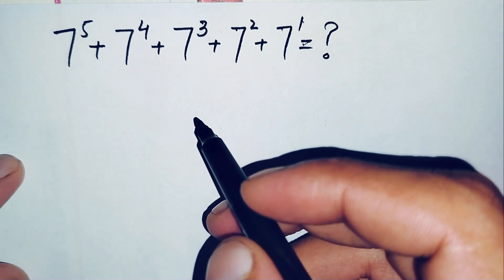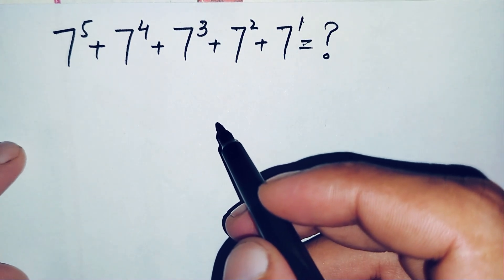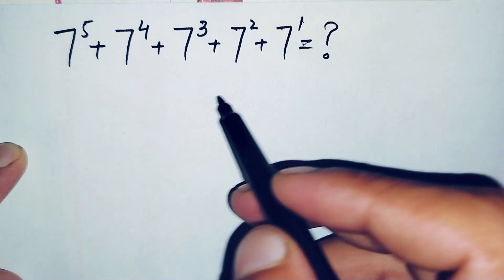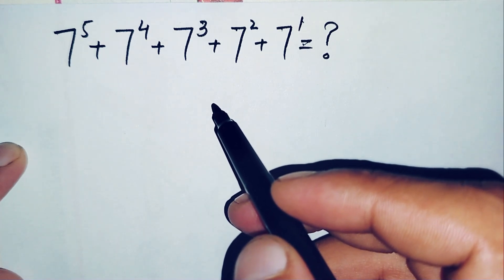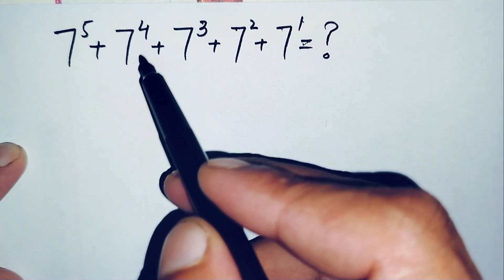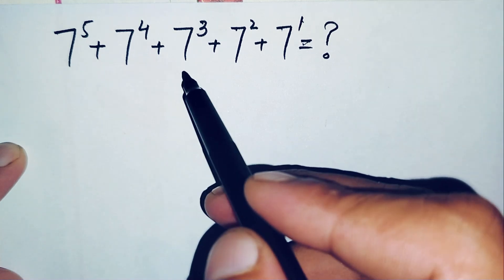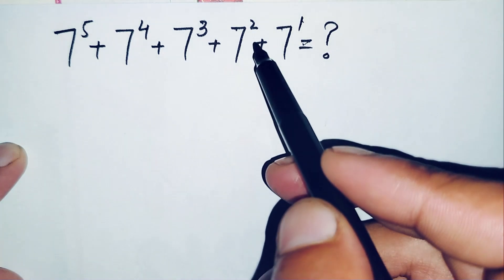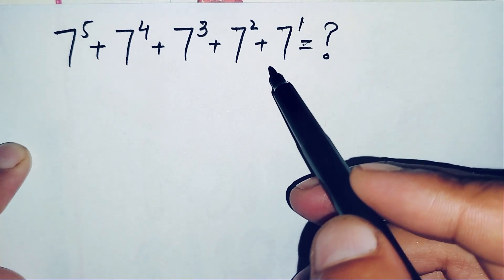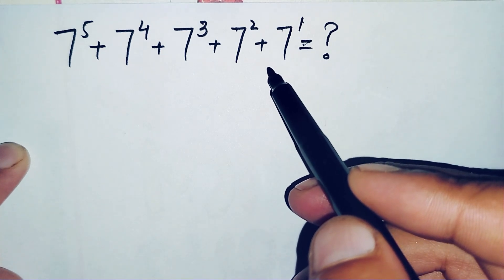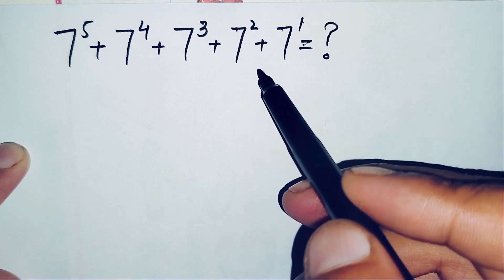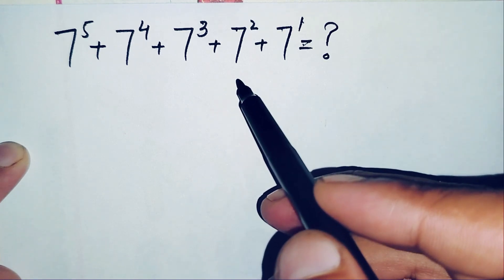Hello everyone, welcome back to Math Explorer. In this video I'm going to solve and find the value of this simplification math problem: seven raised to power five, plus seven raised to power four, plus seven raised to power three, plus seven raised to power two, plus seven raised to power one. I will solve this problem without using a calculator and without using standard multiplication.